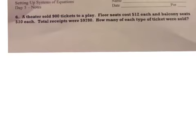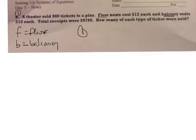The theater sold 900 tickets to a play. Floor seats cost $12 and balcony seats cost $10. Total receipts were $9780. How many of each type? We have floor and we have balcony. Our first equation: they sold a total of 900 tickets. So if you add up floor plus balcony, they sold 900 tickets.